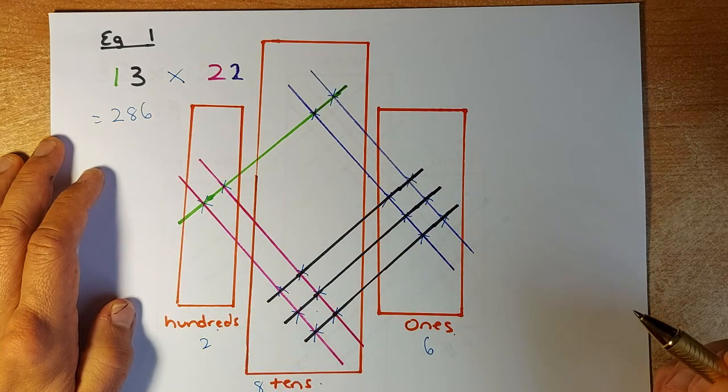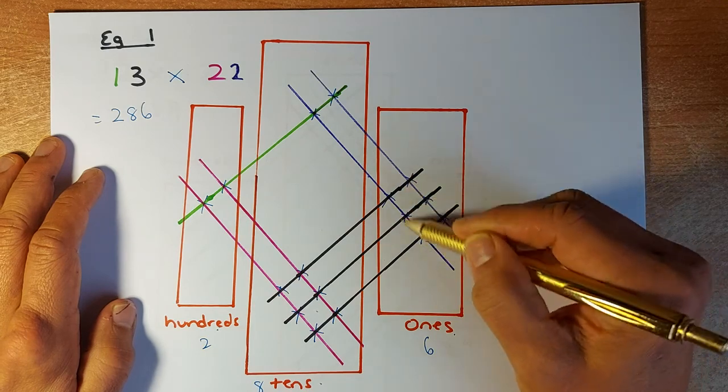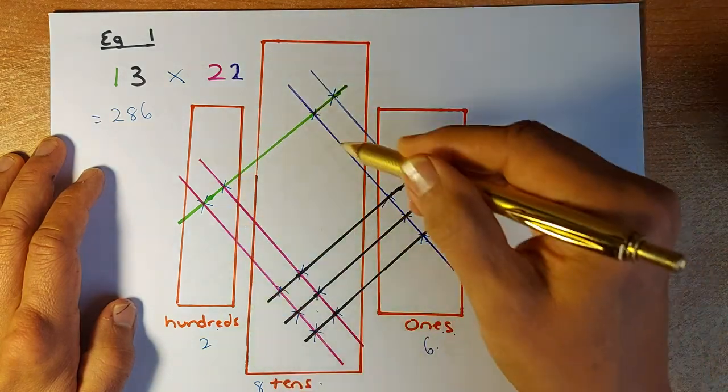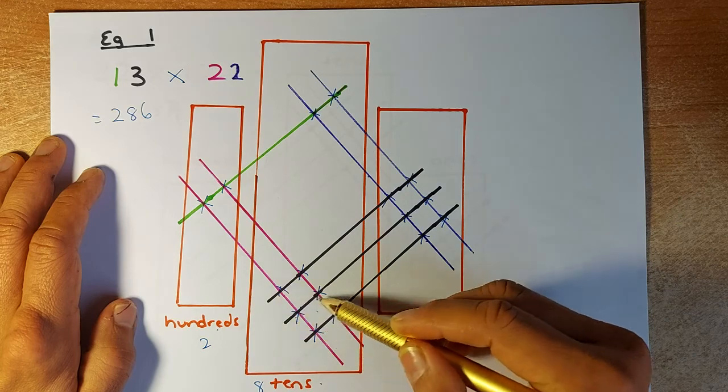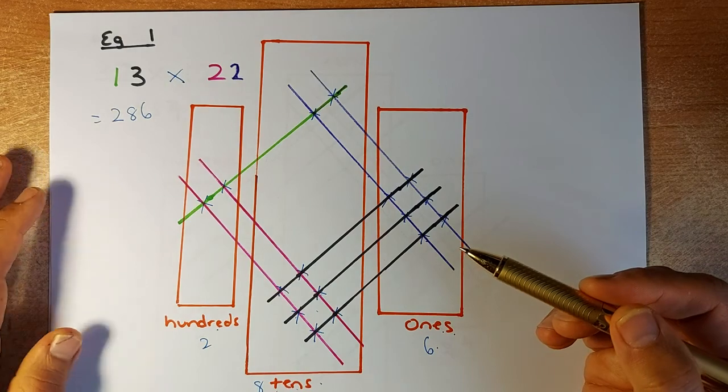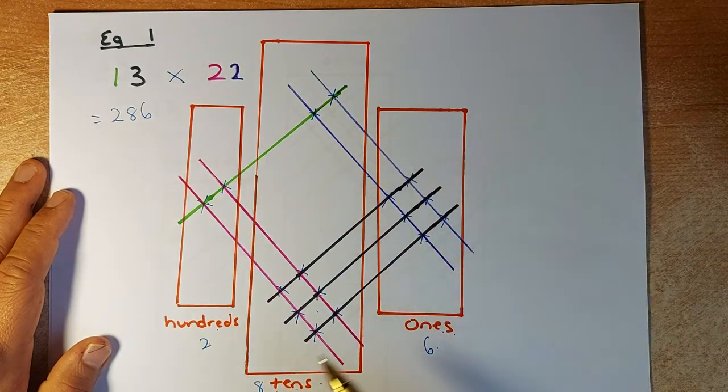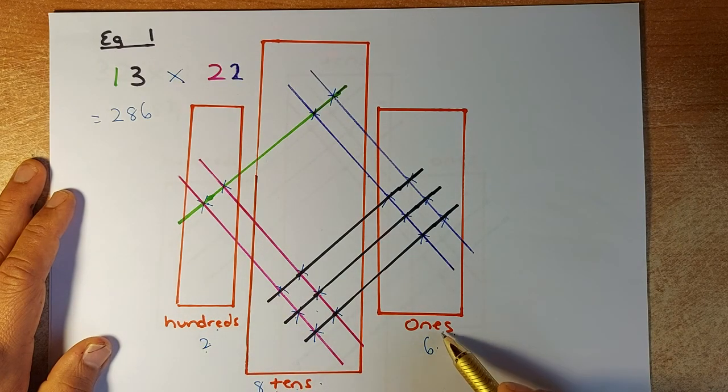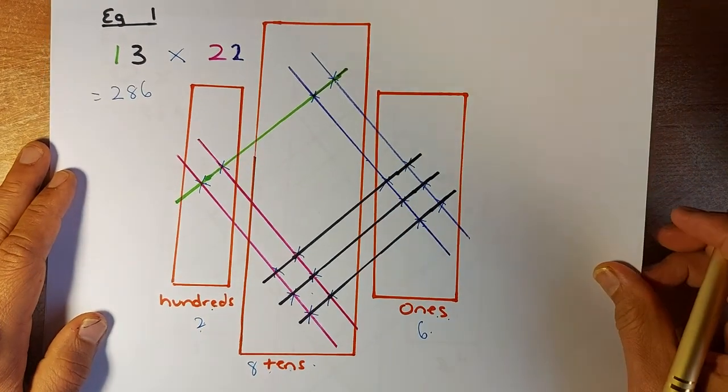We're going to count the points of intersection. In this case, 1, 2, 3, 4, 5, 6. That's where all the two lines meet, so there'll be 6 ones. Similarly, for the tens region, we count 1, 2, 3, 4, 5, 6, 7, 8. So there'll be 8 tens. And the hundreds, 1, 2, so 200. The final answer is 200 plus 80 plus 6, which equals 286.